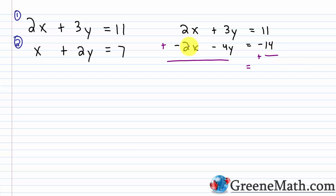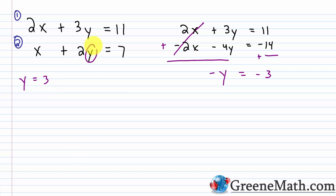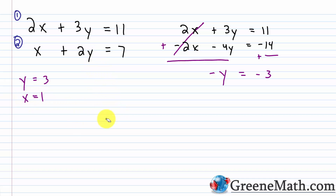After elimination, 3y minus 4y is negative y, and 11 minus 14 is negative 3, so negative y equals negative 3, meaning y equals 3. Plugging back in: 2 times 3 is 6, so x plus 6 equals 7, giving x equals 1. Now I want to show this same process using a matrix to relate the steps.